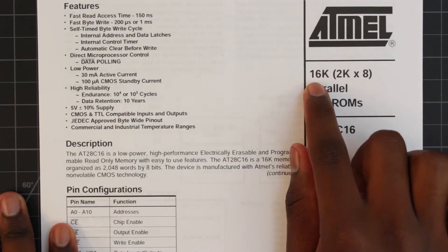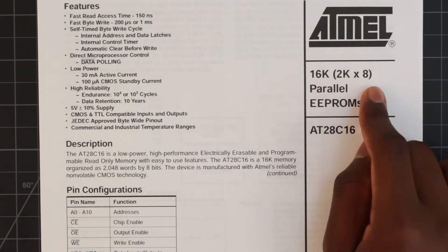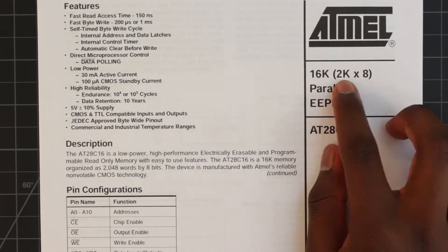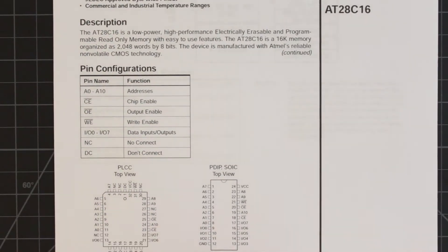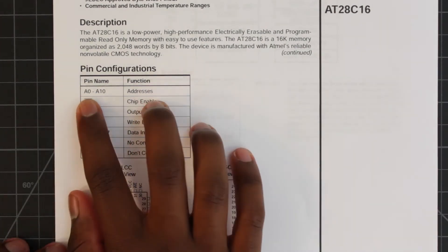Let's take a look at the datasheet. We have the same name of the chip and the 2K by 8 here to verify. Down here at pin configurations, we see that we have 11 addresses, A0 to A10.